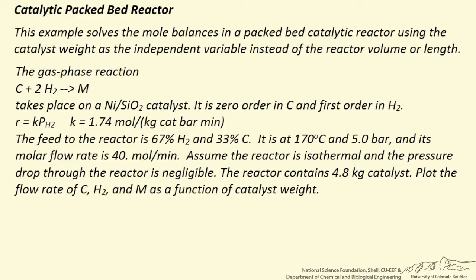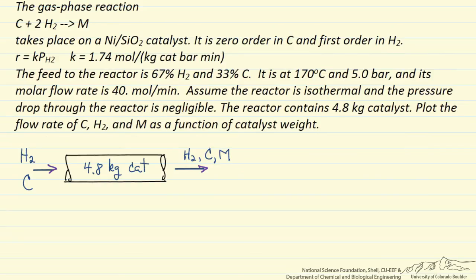So the first thing we are going to do is make a simple diagram to represent the process. So if hydrogen and C are flowing in the reactor and then we have all three species leaving, the reactor contains 4.8 kilograms of catalyst.